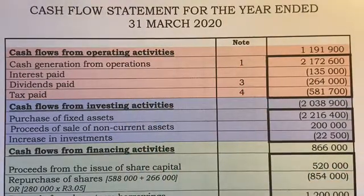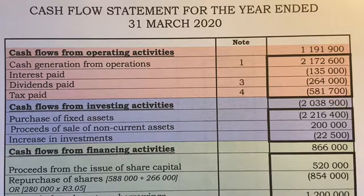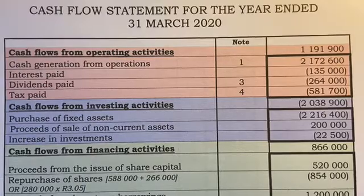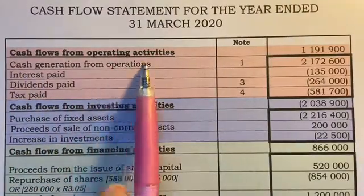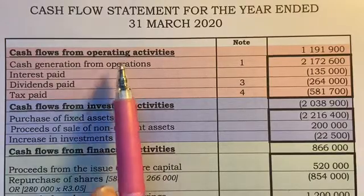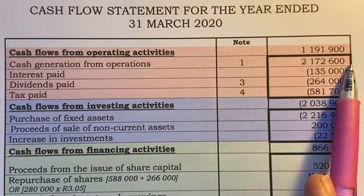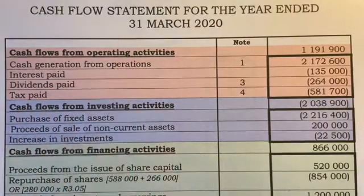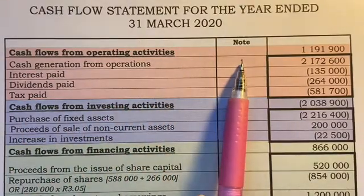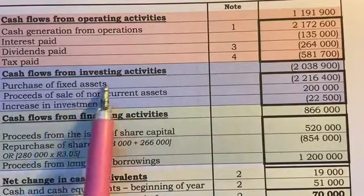This first section — the peach/orange block at the top — is cash flow from operating activities. This is probably the most important part, relating to your day-to-day income and the main purpose of your business: making money. At the top we have cash generated from operations, starting with your net profit adjusted a little bit. They also refer to interest paid, dividends paid, and tax paid as regular operating activities. There are also things like debtors, creditors, and stock within this section.